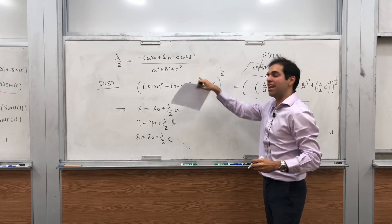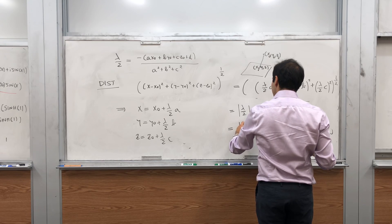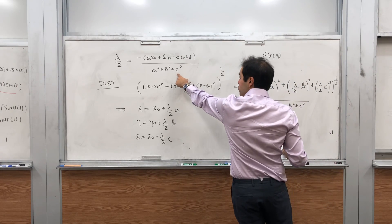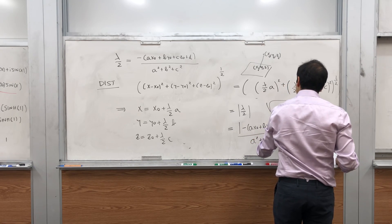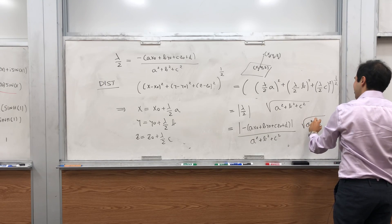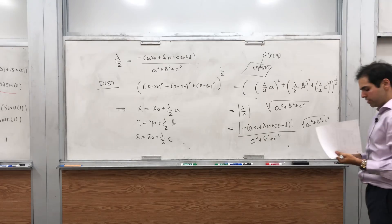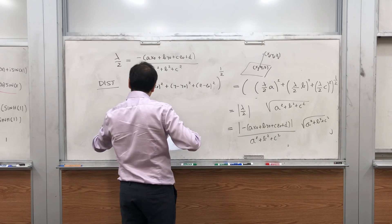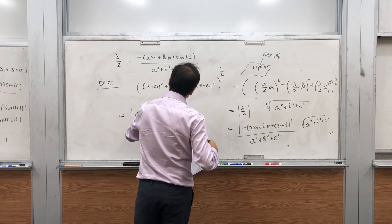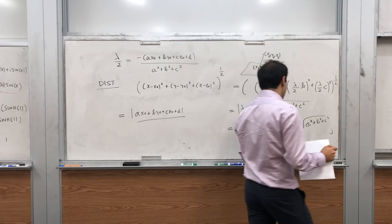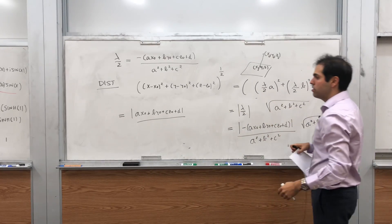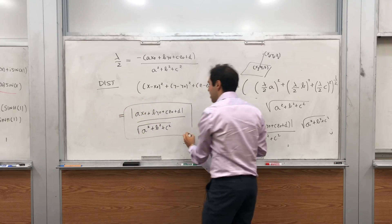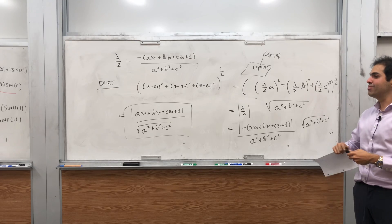Substituting our formula for λ/2, the distance becomes |-(ax0 + by0 + cz0 + d)| / (a² + b² + c²) times √(a² + b² + c²). Since a² + b² + c² is positive, and the absolute value of (-x) equals |x|, this simplifies to |ax0 + by0 + cz0 + d| / √(a² + b² + c²), which is our distance formula for the distance between a point and a plane.